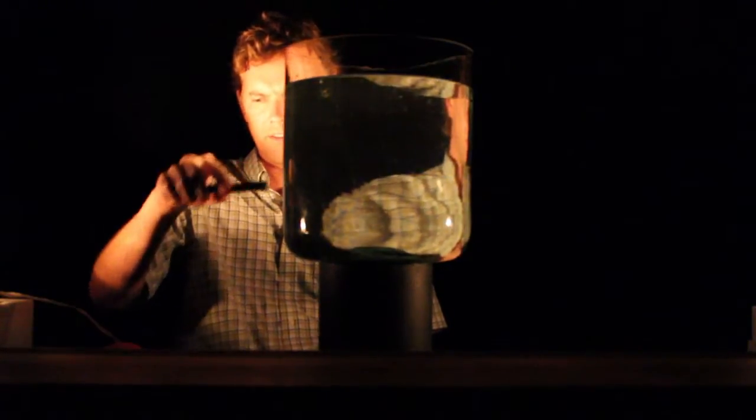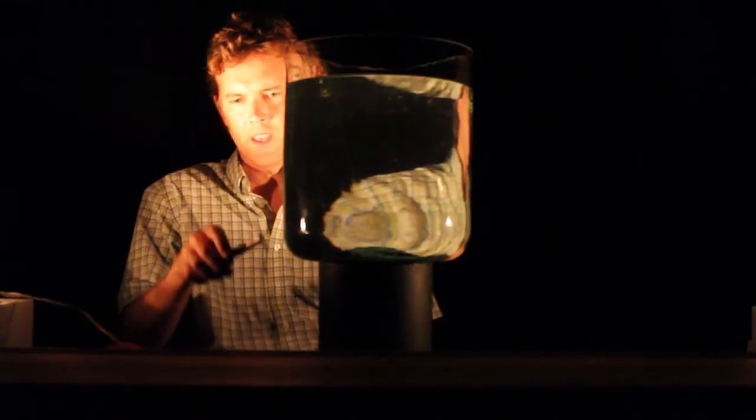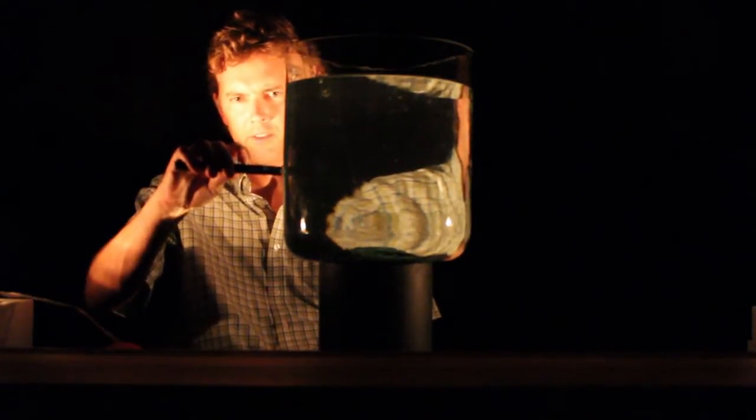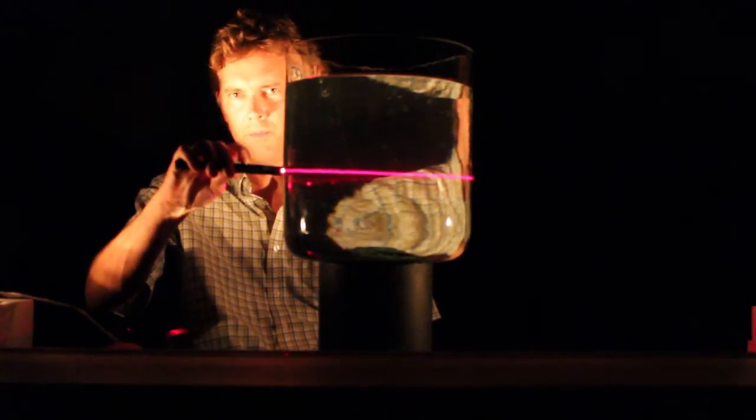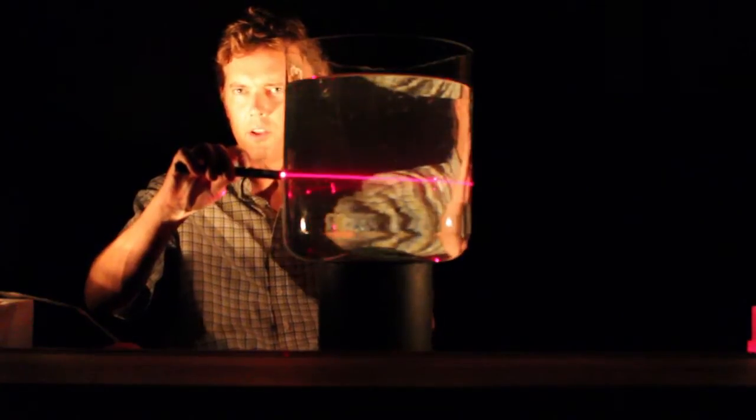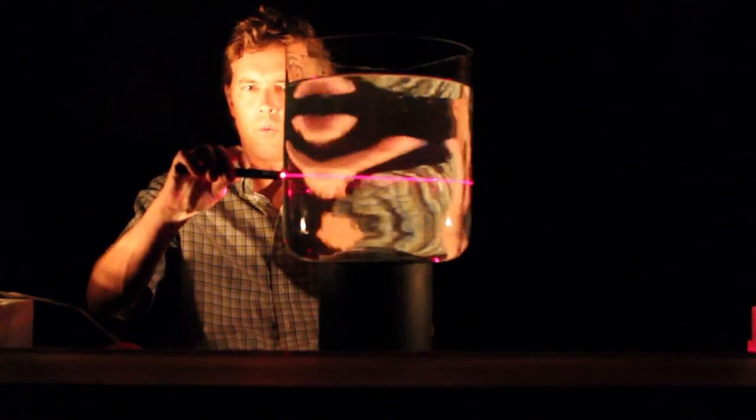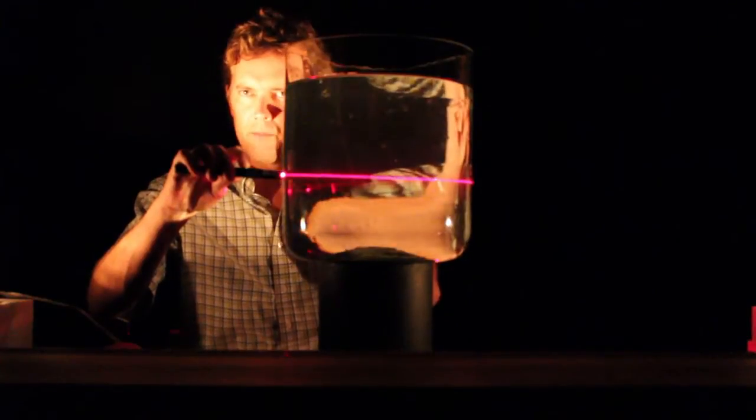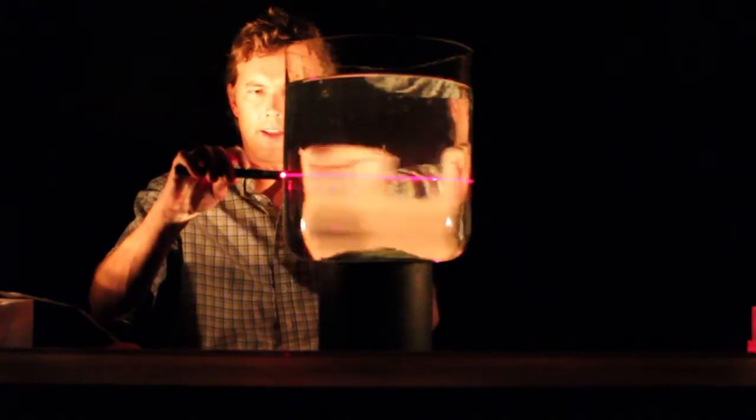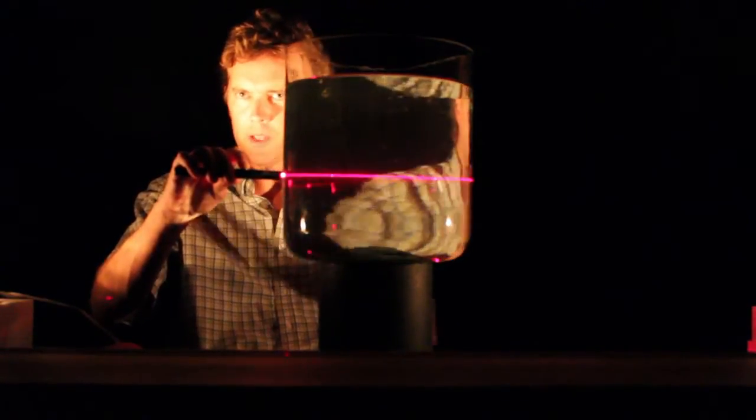So what's going on inside this canister is the laser light is propagating through and it's scattering off all the little particles that are inside the water. When that light scatters, it comes out to your eye and that forms the tracer, the laser beam that you see.